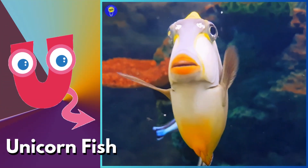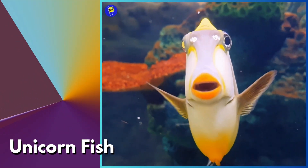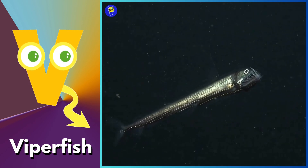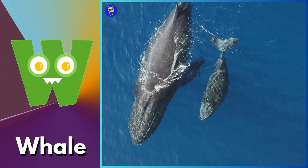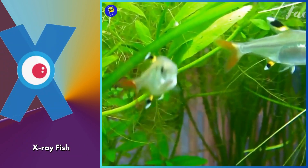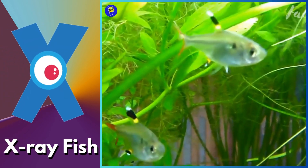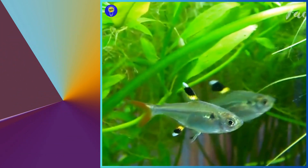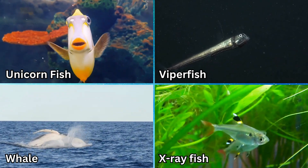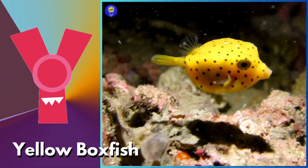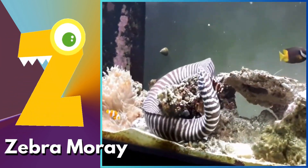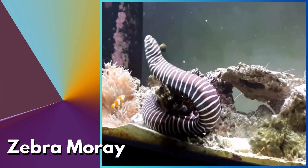U is for unicornfish, uh, uh, unicornfish. V is for viperfish, v, v, viperfish. W is for whale, w, w, whale. X is for x-ray fish, z, z, x-ray fish. Y is for yellow boxfish, yeah, yeah, yellow boxfish. Z is for zebra moray, z, z, zebra.